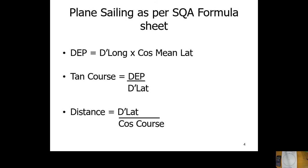I personally advocate using plain sailing wherever you can rather than Mercator, if the distance is less than 600 miles. More than 600 miles and we're going to have to use Mercator — we don't have a choice in that.